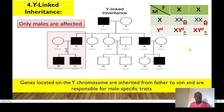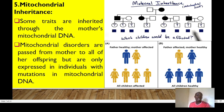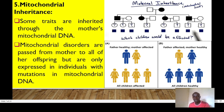For Y-linked inheritance, only males are affected. Genes located on the Y chromosome are inherited from father to sons and are responsible for male-specific traits. For mitochondrial inheritance, some traits are inherited through the mother's mitochondrial DNA, so mitochondrial disorders are passed from the mother to all of her offspring, expressed in individuals with mutations in mitochondrial DNA.